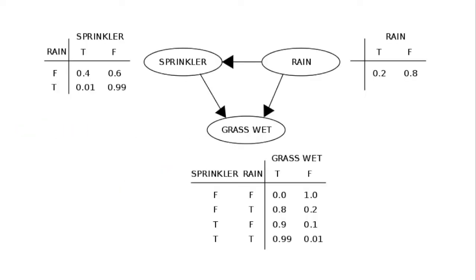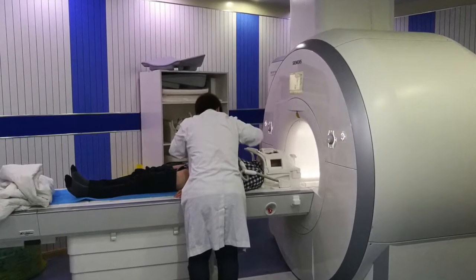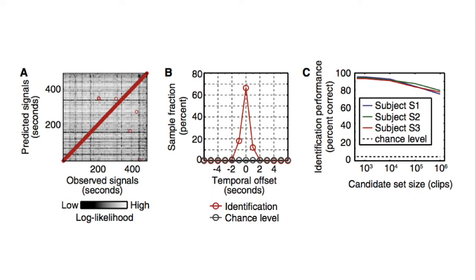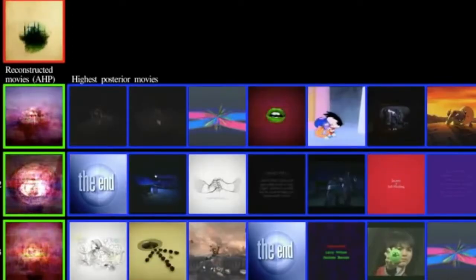Then as you feed in new data, you can make predictions based off of those old probabilities. What they did was they showed their test subjects a bunch of videos while scanning their brains with fMRI, which allowed them to build a Bayesian network out of that initial data. Then they showed the test subjects new video and fed the data into their Bayesian network, which then recreated the video that it thought the test subjects were seeing.